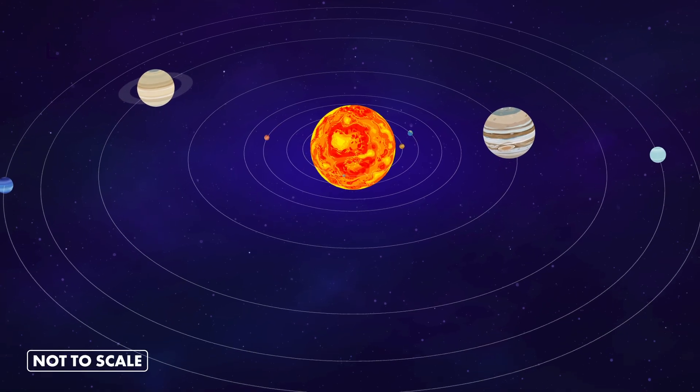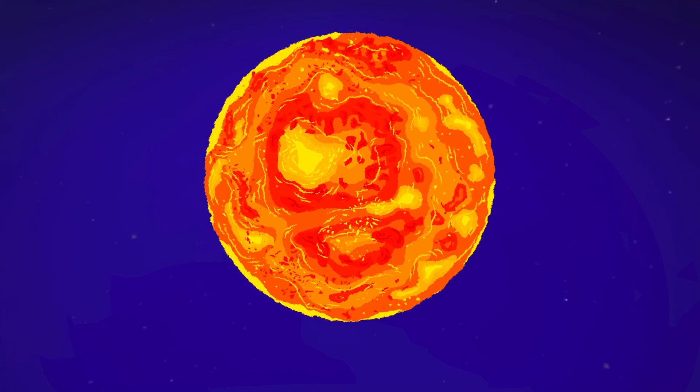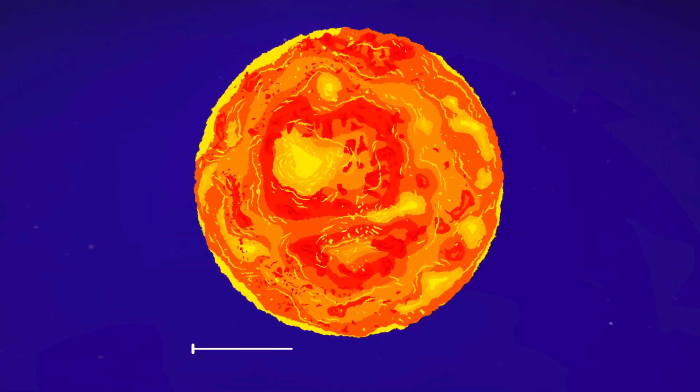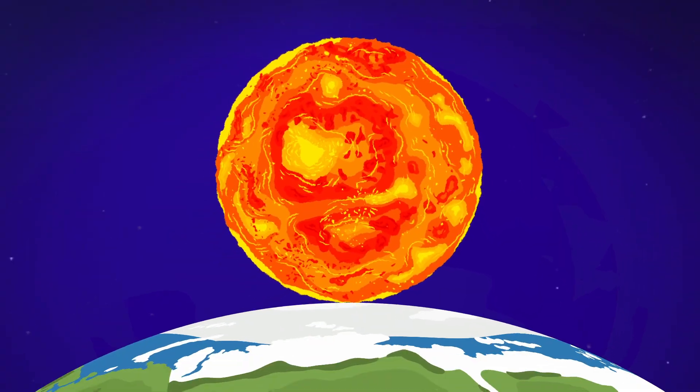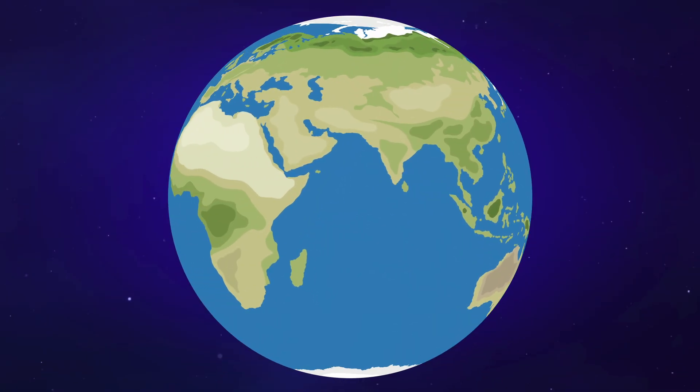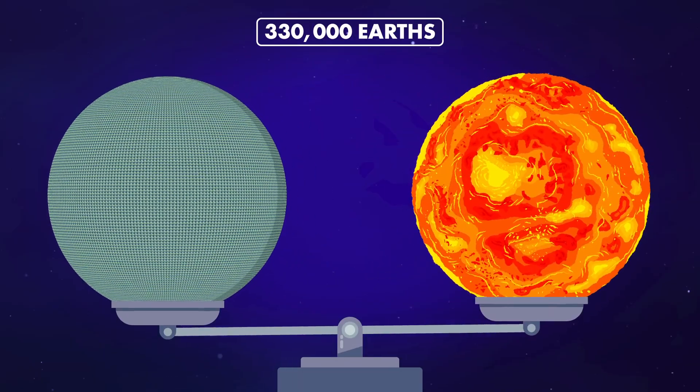At the center of our solar system shines a yellow dwarf star known as the Sun. This hot, glowing ball of gas is the largest object in our solar system, with a diameter of roughly 1.4 million kilometers. It would take over a million Earths to fill the Sun's volume, and more than 330,000 Earths to equal its mass.